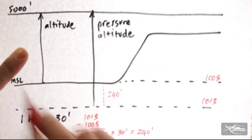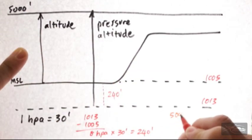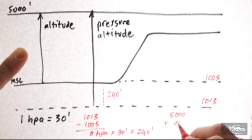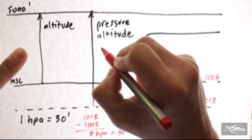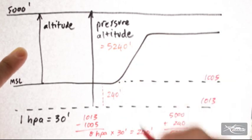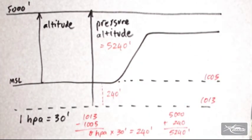We now have a difference of 240 feet, except that the 240 feet has to now be added to the 5,000 feet to find out what the pressure altitude is. So in this case, you can see that the answer will be 5,240 feet pressure altitude.